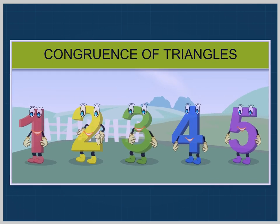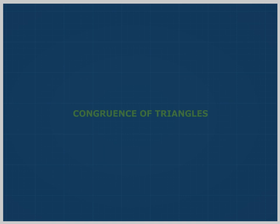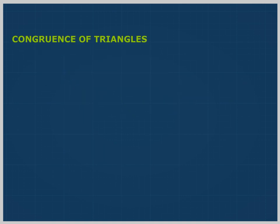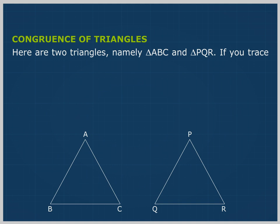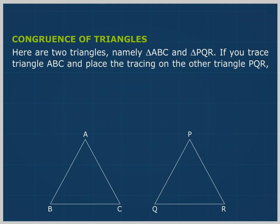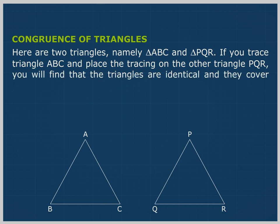Congruence of Triangles. Here are two triangles, namely triangle ABC and triangle PQR. If you trace triangle ABC and place the tracing on the other triangle PQR, you will find that the triangles are identical and they cover each other exactly.